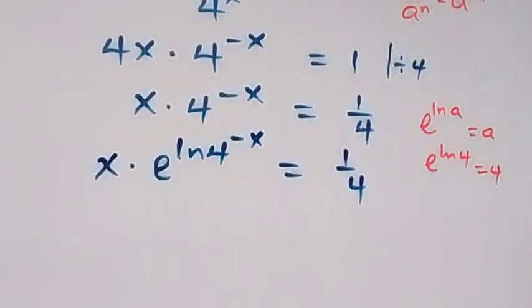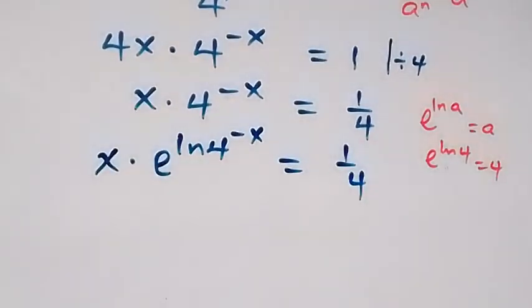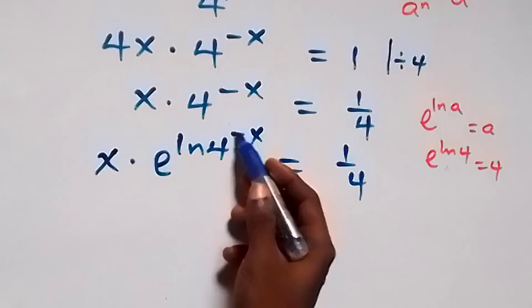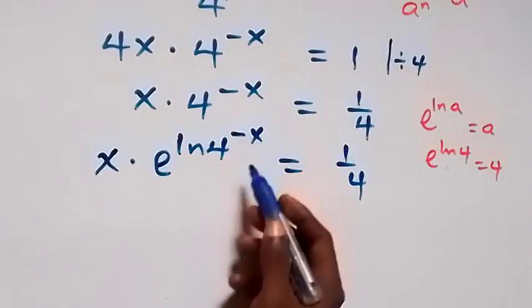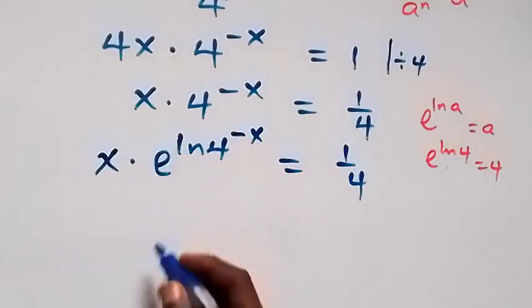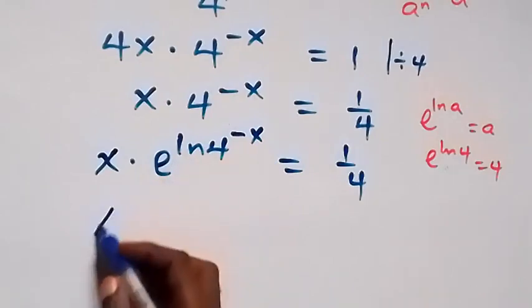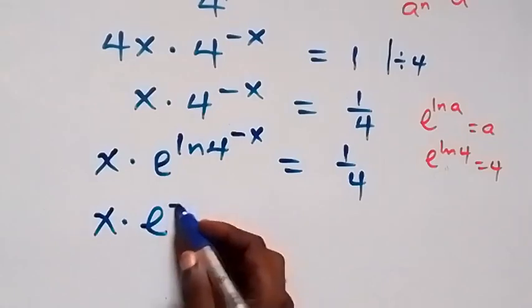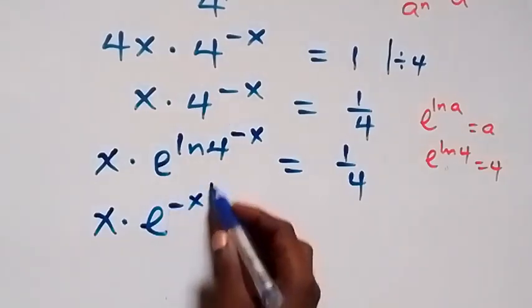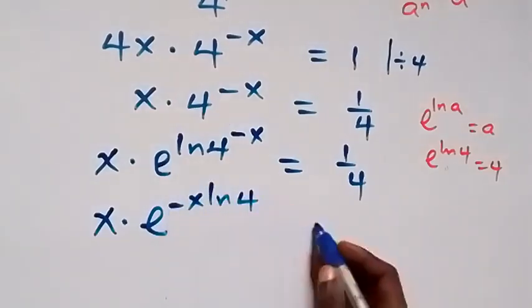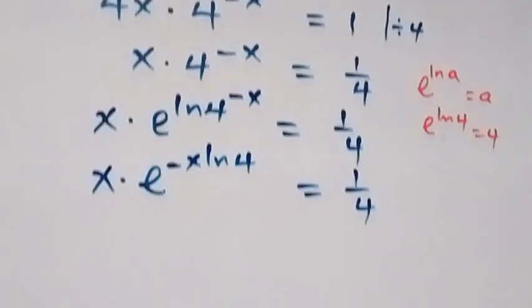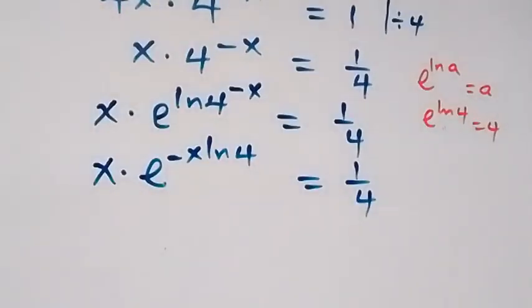Which is raised to power minus x, now equals to 1 over 4 on this side. From the law of logarithms, the power here, which is minus x, we bring it down. So we have x times e raised to power minus x·ln(4), equals to 1 over 4.